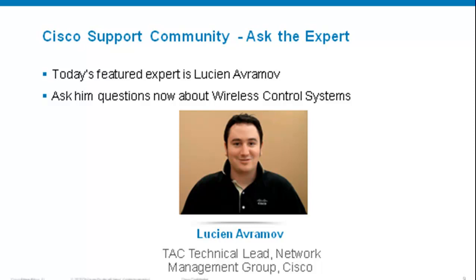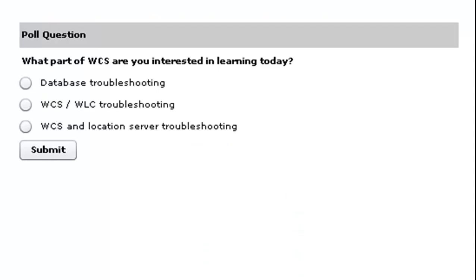We're going to start out today with a polling question: What part of Cisco's wireless control system are you more interested in learning about today? Database troubleshooting? Wireless control system and wireless LAN controller troubleshooting? Or wireless control system and location server troubleshooting? Please take a moment and submit your answer. We'll get back to those results shortly.